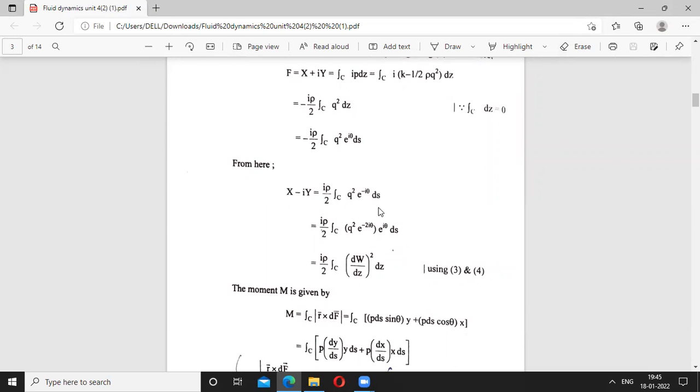You can write E raised to power minus iota theta into E raised to power iota theta. From equation 3 and 4, we have DW by DZ whole square DZ.